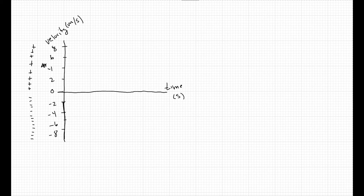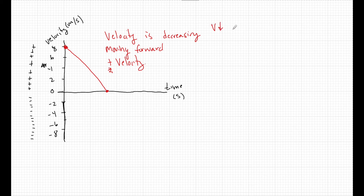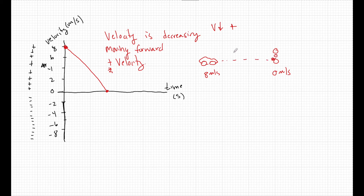If I draw a slope going from 8 down to 0, velocity is decreasing — going 8, 6, all the way down to 0. But the entire time it's moving forward, and the entire time it is a positive velocity. So you can have a positive velocity with a decreasing velocity. An example of this is a car approaching a stoplight: you're going 8 meters per second, you slow to 0 meters per second. But the entire time, you're still moving forward. A positive velocity means you're moving forward.